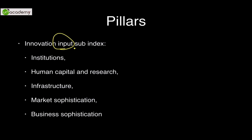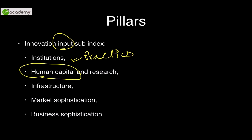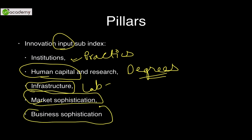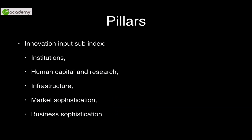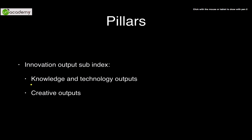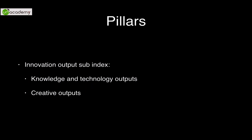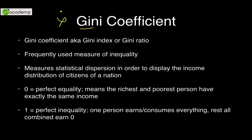The five pillars under the Innovation Input Sub-Index are: institutions (practices and policies), human capital and research (necessary degrees and infrastructure like laboratories), infrastructure, market sophistication (how sensitive the market is to innovation), and business sophistication (how business evolves around innovation). Under the Innovation Output Sub-Index, there are two pillars: knowledge and technology outputs, and creative outputs.